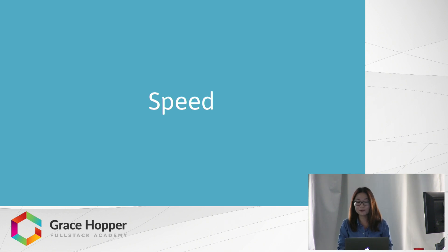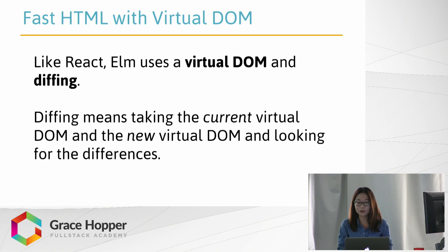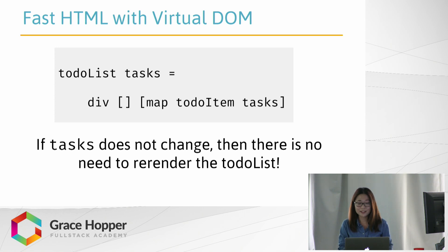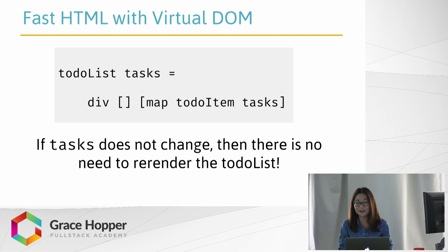Just by knowing these two things, we can understand why Elm is able to render HTML so quickly, as we saw in that previous bar graph. Like React, Elm uses a virtual DOM — an abstract version of the DOM — and diffing, which means looking for the differences between the current virtual DOM and the new virtual DOM. Virtual DOMs are fast since when one element in the DOM should be changed, they only update that element rather than force the re-render of the entire page. For example, the function to-do list takes in the record tasks. Since it's a pure function, we know that if tasks doesn't change, there's no need to re-render to-do list. And it's very easy to tell whether tasks has changed, since values can't be mutated in Elm — we can simply compare values by reference, which is a very cheap operation, leading to the great benchmarks we've seen.